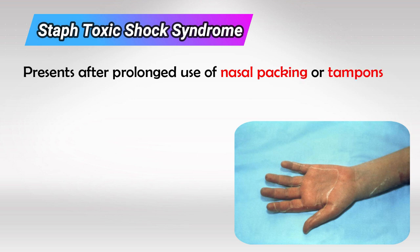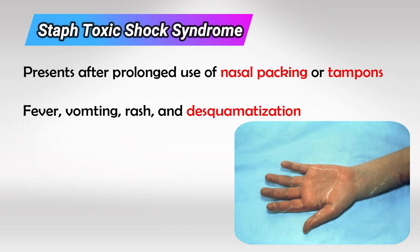Once the bacteria enters the blood it will cause fever, severe vomiting and rash. The hallmark is desquamation, which is the skin peeling off in the palms and soles. The desquamation occurs one or two weeks after the onset of symptoms.